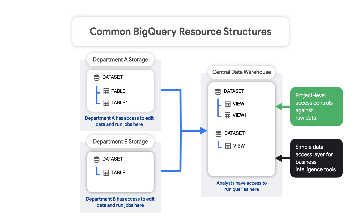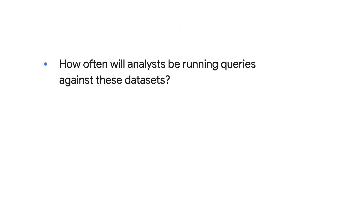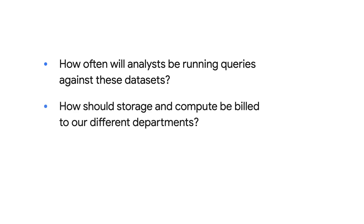Many BigQuery administrators use some combination of these two structures. When deciding on your own architecture, you should be asking questions like: how often will analysts be running queries against these datasets? How should storage and compute be billed to our different departments? And who should have access to what data? We hope this overview gets you well on your way to designing your BigQuery architecture. For more guidance on getting started with BigQuery or the BigQuery resource model, check out the links below. Thanks for joining us today for BigQuery Spotlight — watch out for the next episode, and remember, stay curious.